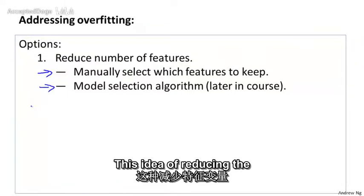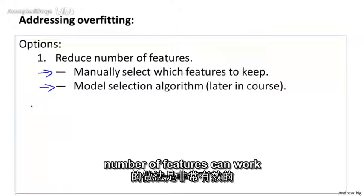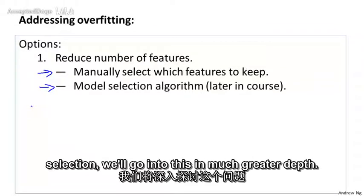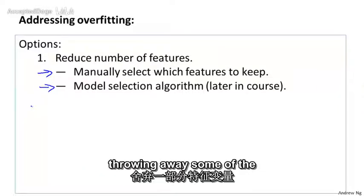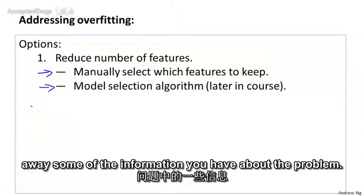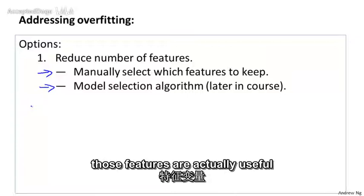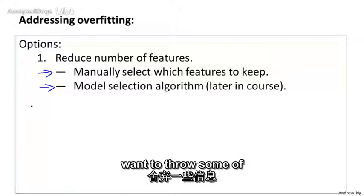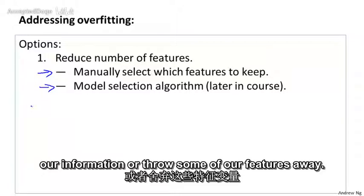This idea of reducing the number of features can work well and can reduce overfitting. And when we talk about model selection, we'll go into this in much greater depth. But the disadvantage is that by throwing away some of the features, it's also throwing away some of the information you have about the problem. For example, maybe all of those features are actually useful for predicting the price of a house. So maybe we don't actually want to throw some of our information or throw some of our features away.